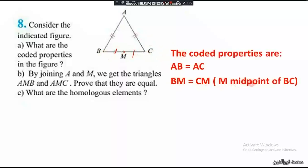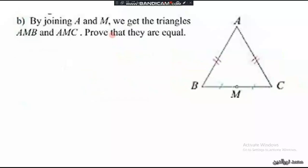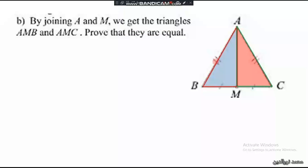By joining A to M, we get triangles AMB and AMC. This is triangle AMB and this is triangle AMC, and we have to prove that they are equal triangles.